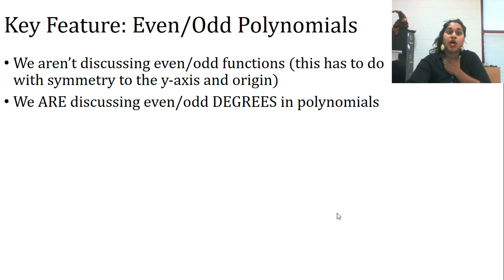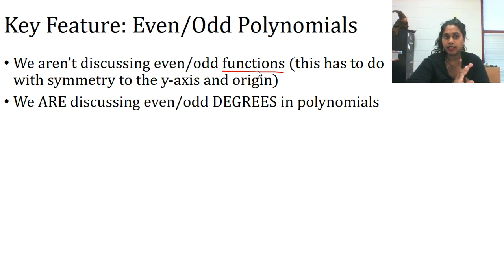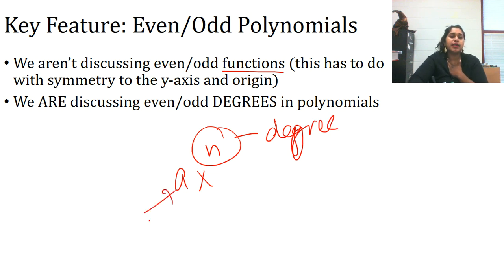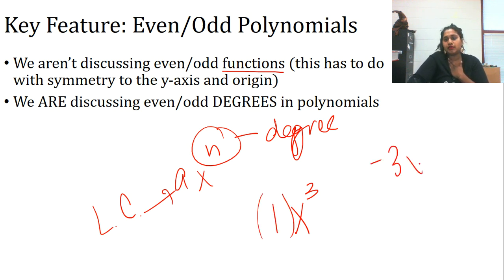Last two key features: even and odd polynomials. We're not discussing even and odd functions — that's about symmetry. We're discussing even and odd degrees in polynomials. The degree is the exponent, x to the whatever. The leading coefficient is whatever number is in front. If it's just x³, my degree is 3 and my leading coefficient is the invisible positive 1. For -3x⁴, my degree is 4 and my leading coefficient is -3.